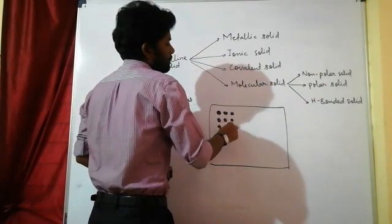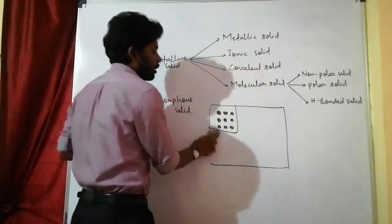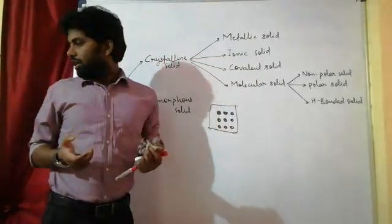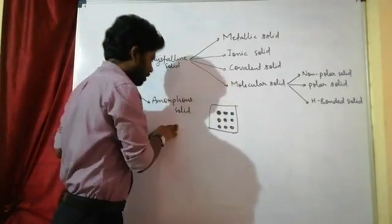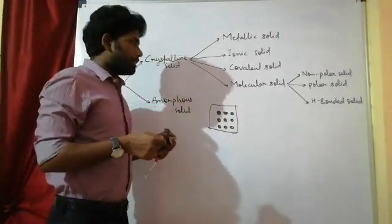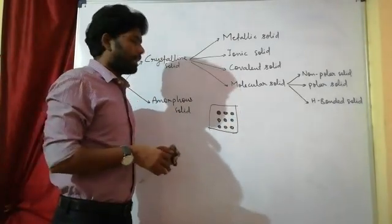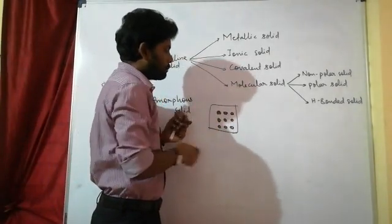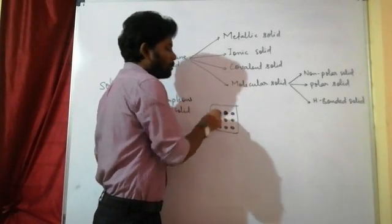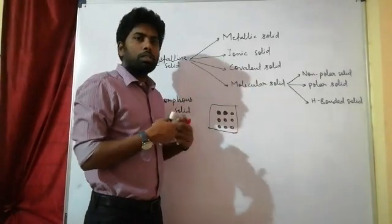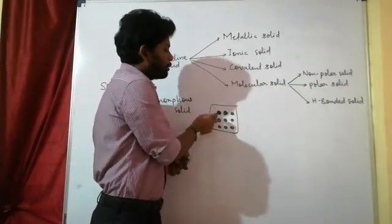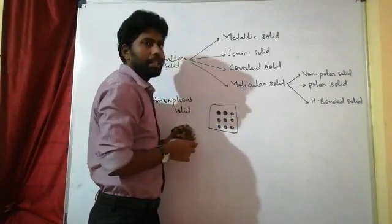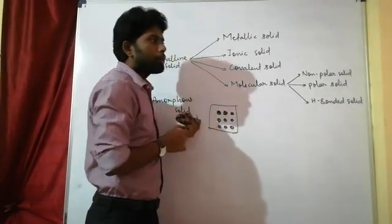Solids have constituent particles. In class 6-7, we learned that solids are a rigid body — they cannot be compressed. They have a fixed and definite volume and mass. The intermolecular space between the constituent particles is very small, and the constituent particles cannot move from their position; they can only vibrate or oscillate about their mean position.